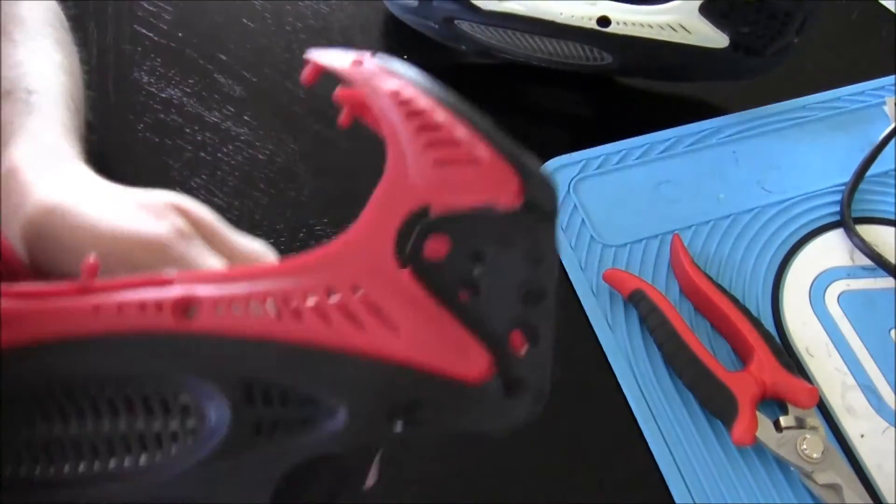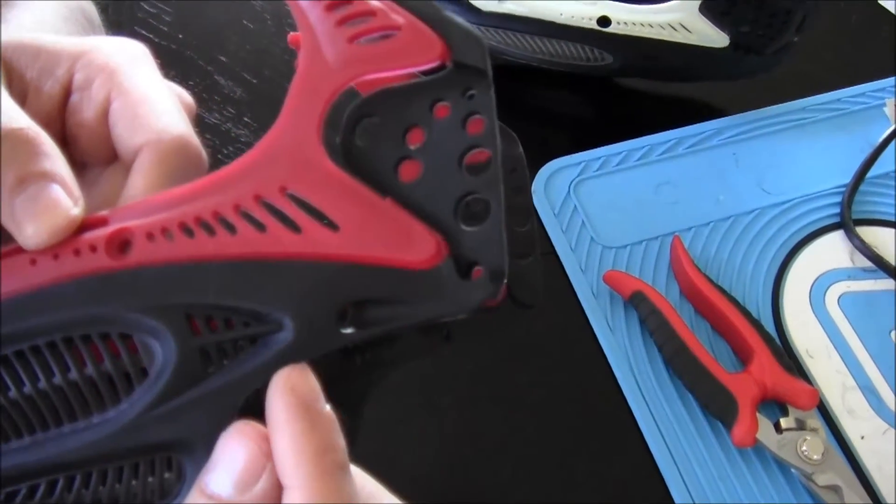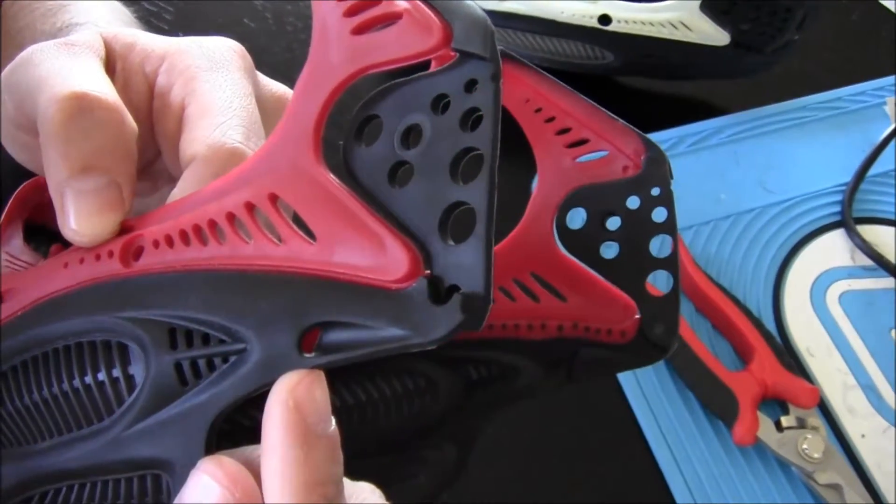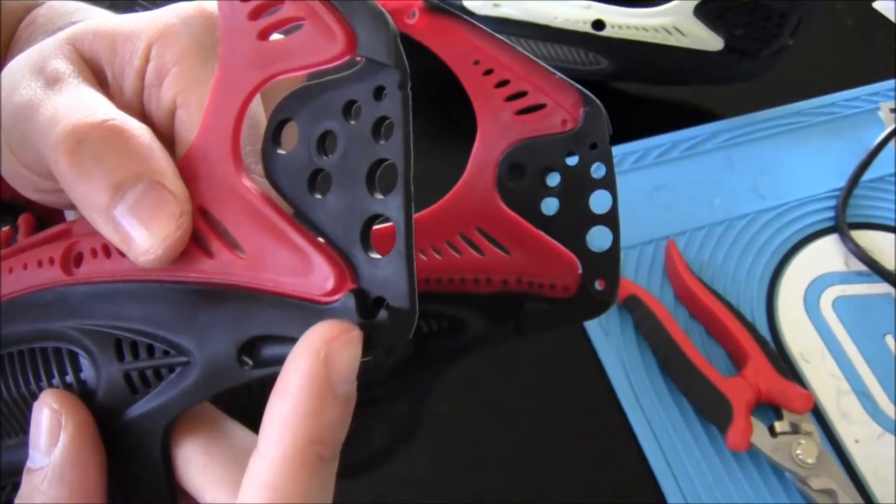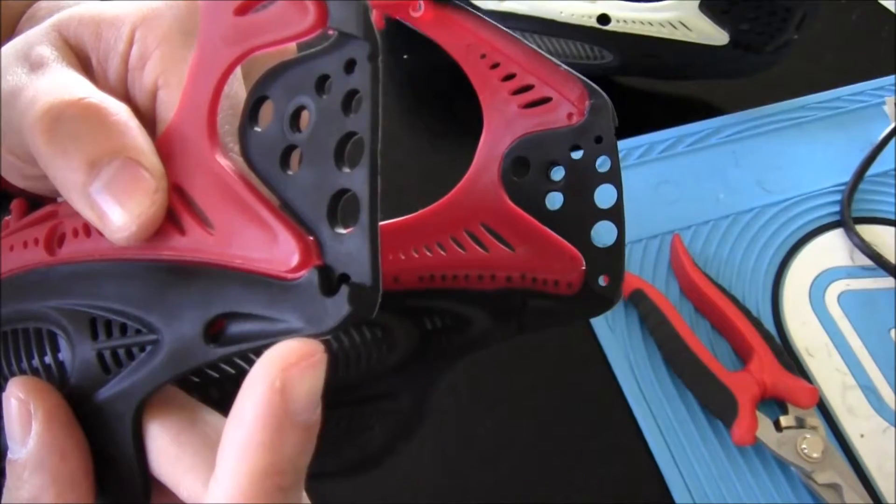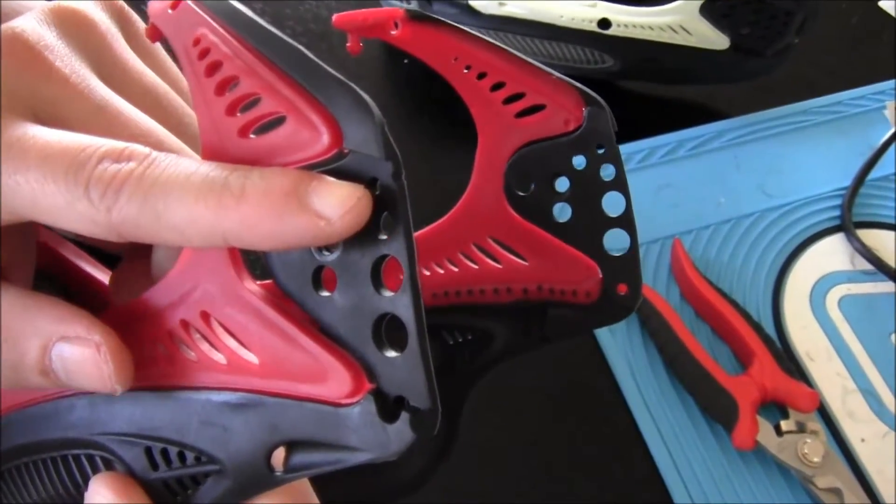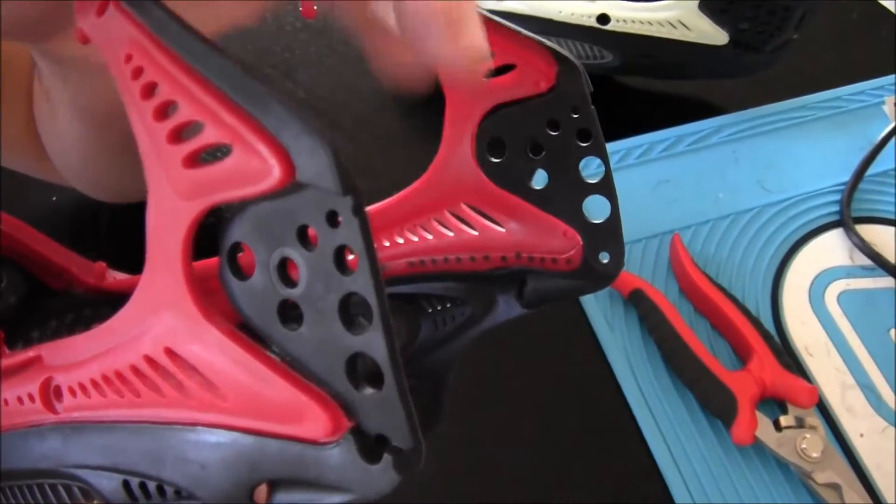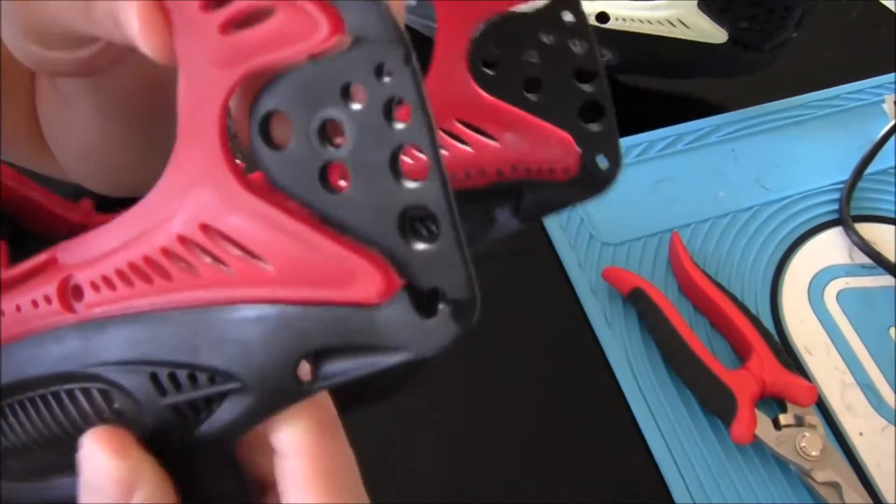Those are the first things you want to notice. You want to see these vents right here, the teardrop, and these three holes in the back strap area. Here it is on the i3 Pro. Those vents are completely gone. The teardrop right here is complete, it's perfect. The first hole is complete, the second one is half gone. Just take note of that.